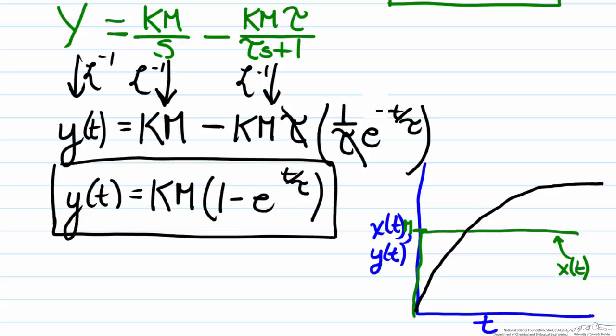And there are a couple important values here. The first is the fact that this function will converge to km. Why it will converge to km is the fact that at long times the e to the negative t over tau term will approach zero, because t will get high so it will be e to the negative infinity, which is zero. So therefore at long times this function will converge to km, in other words the steady state of the system.